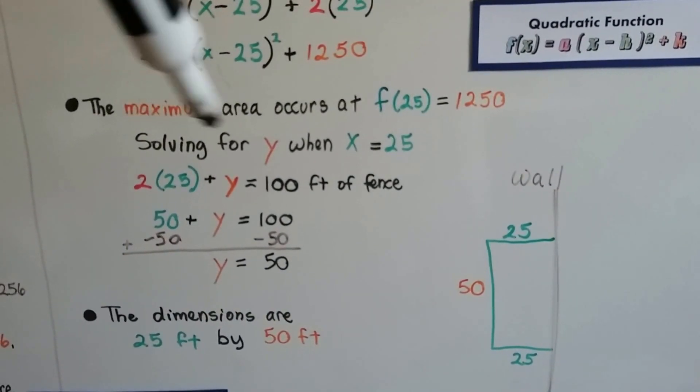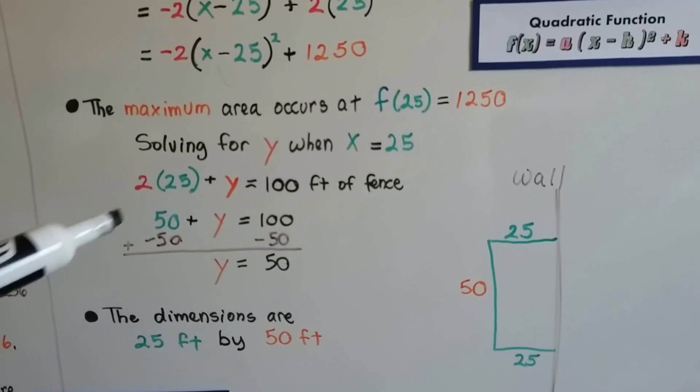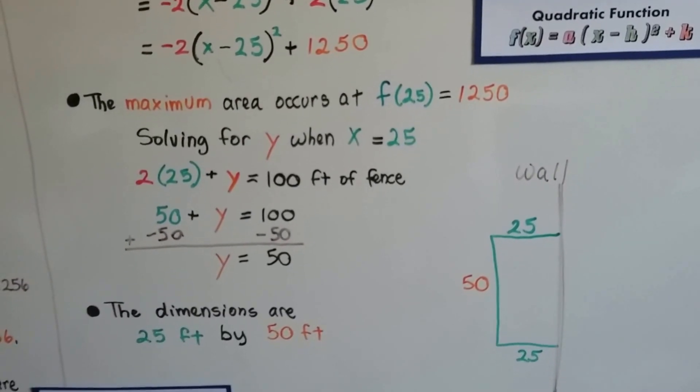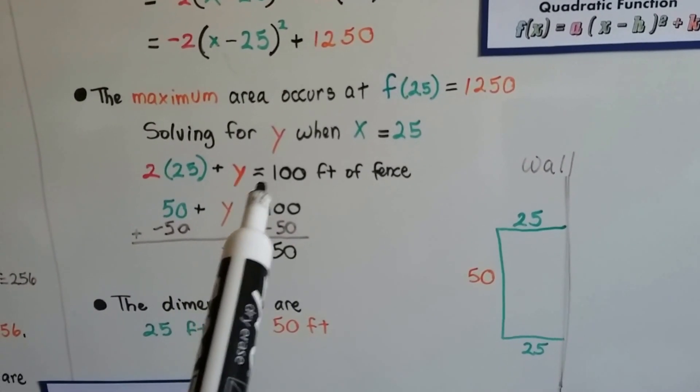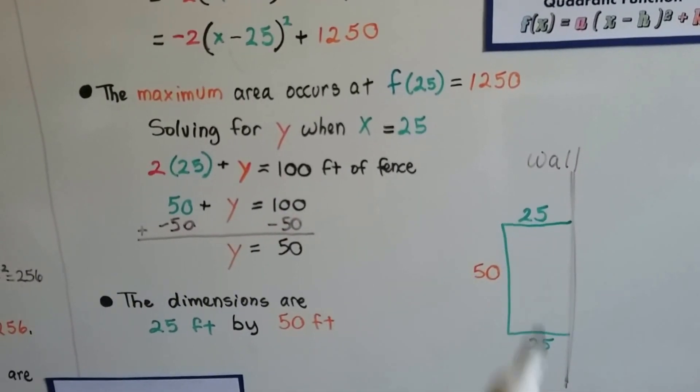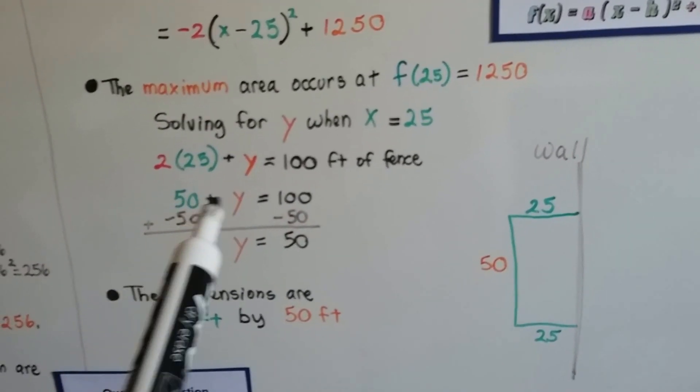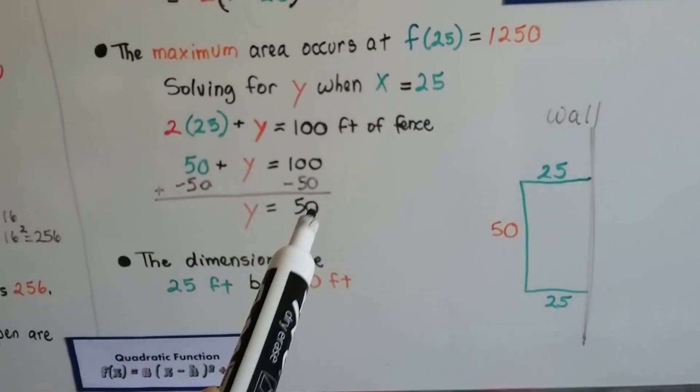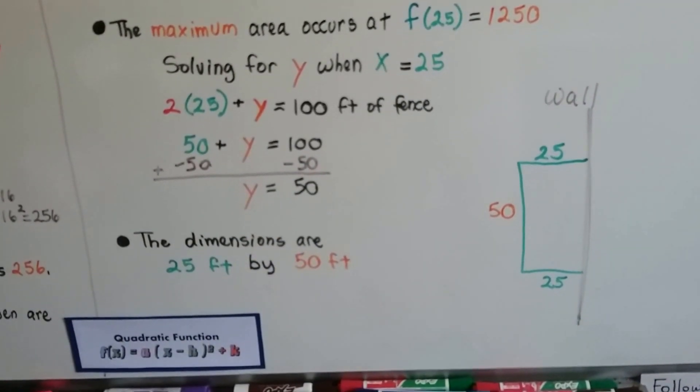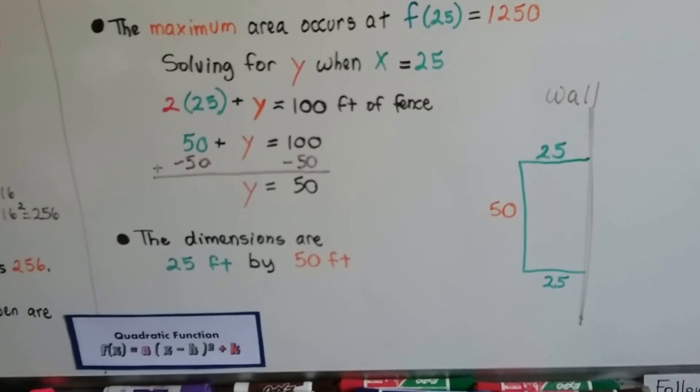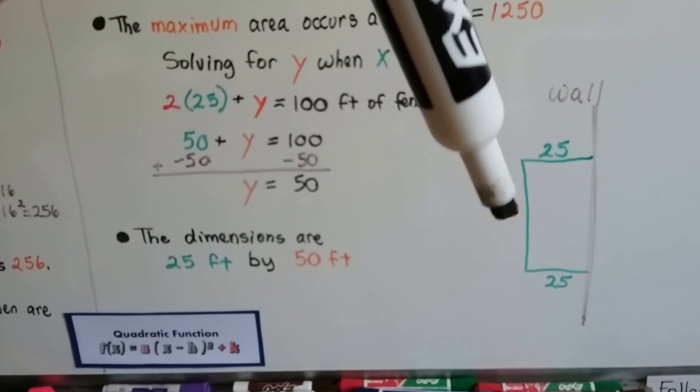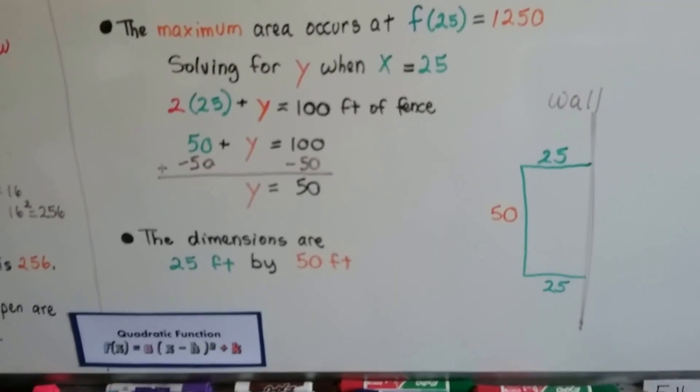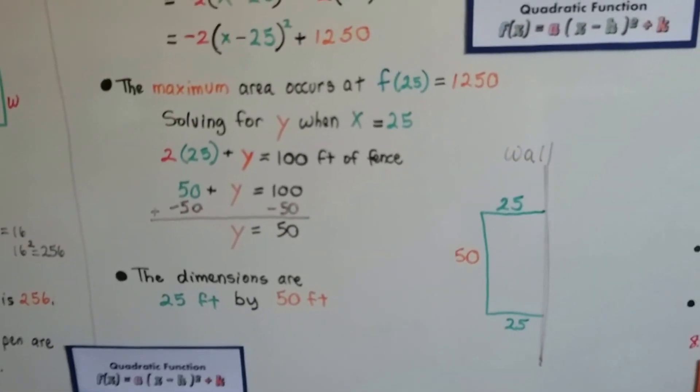Solving for Y when X = 25, we get 2(25) + Y = 100 feet of fence. That means 50 + Y. We can add -50 to each side to isolate Y. We get Y = 50. So we know the dimensions of the fencing will be 25 feet by 50 feet. See how I did that?